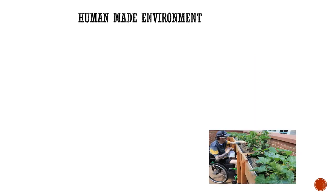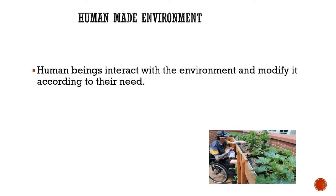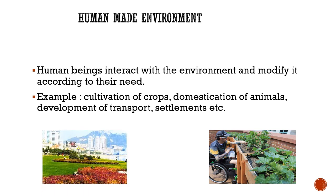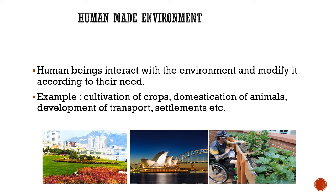Now we will see human-made environment. As human beings are different from all other forms of life, they interact with nature and modify it according to their needs to make their life comfortable. For example, they grow crops to get food items, they rear animals to get animal products for their survival. They have also developed transport, settlements, and factories, and constructed roads and railways. All these things developed by human beings to make their life comfortable are called human-made environment.